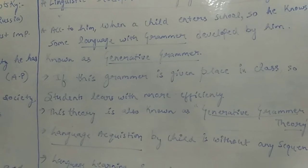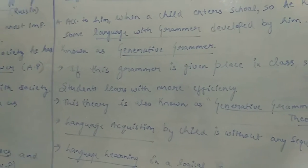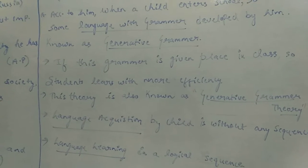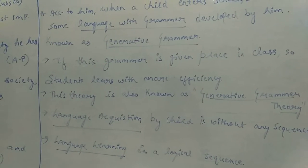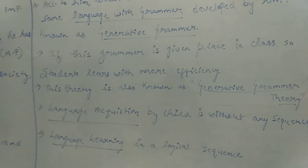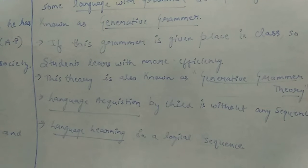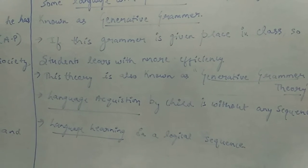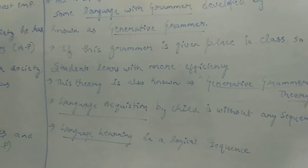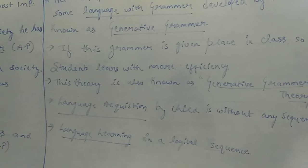If a child's mother tongue grammar is strong, that is a good foundation. If instruction in class is given in the child's own language, and a teacher is provided accordingly, the speed of learning is higher — the child picks up things quickly. But if you give the child a completely new language, they don't pick it up as quickly.